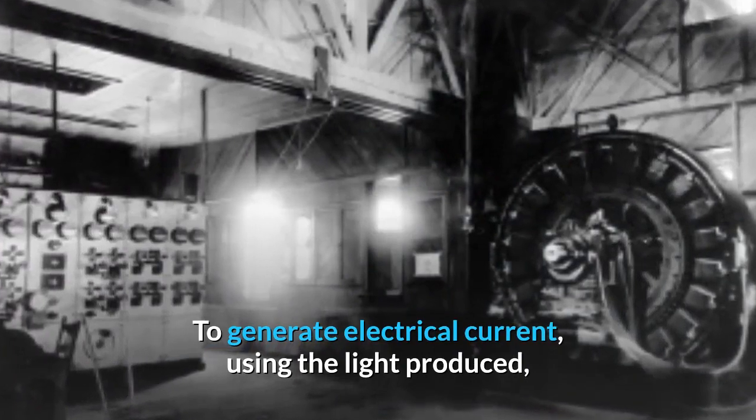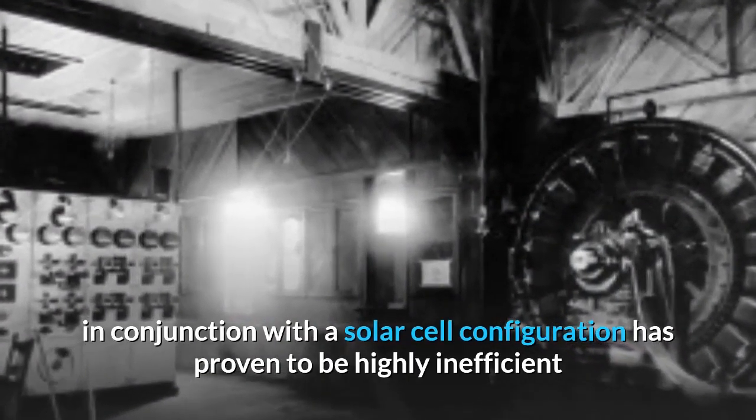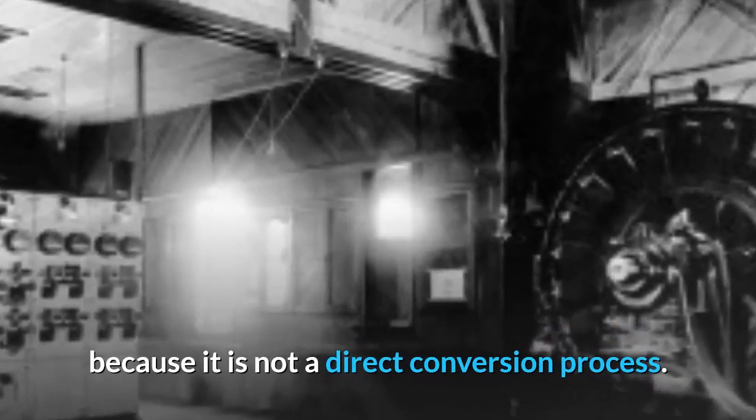To generate electrical current using the light produced in conjunction with a solar cell configuration has proven to be highly inefficient because it is not a direct conversion process.